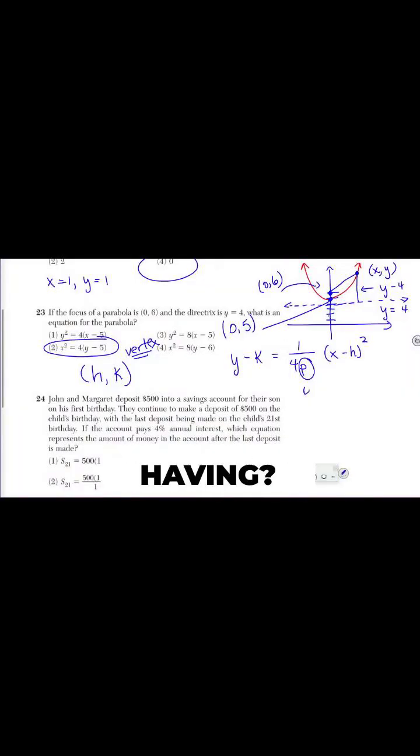So what do we end up having? We end up having Y minus 5. Remember, P is equal to 1 in this case. So, 1 fourth times X minus 0 squared.